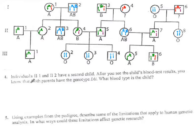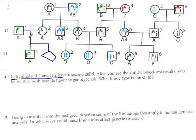But wait — they give us some new information now. Individuals 2-1 and 2-2, this couple, have a second child, which we'll put in the space they gave us. They don't say what their gender is, and you normally use a diamond for unknowns like that. After you see the blood type from this child, you immediately know that both parents are Ia little i.